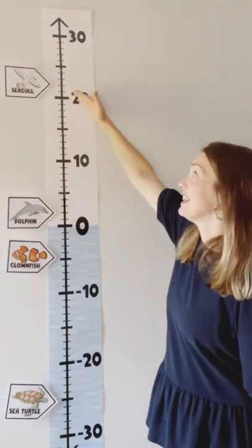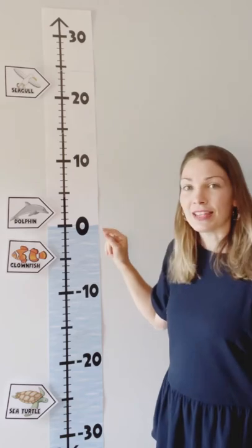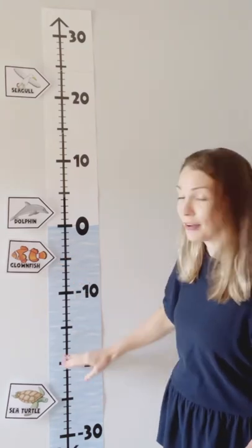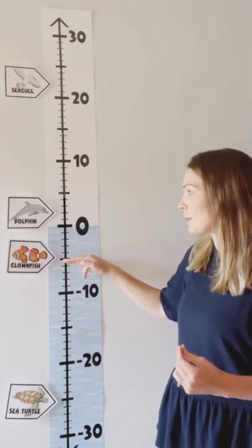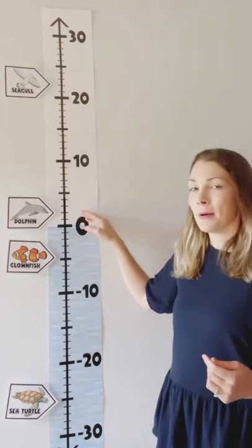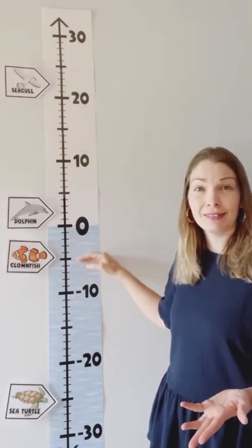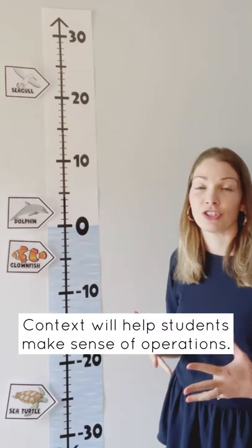Let's think about some things we could ask them. What's the distance between the dolphin and the seagull? As they think through the operation they're doing there — subtraction — they might use that again when we ask, what's the distance between the clownfish and the sea turtle? Most students can look at this and tell you that answer, but if you were to give them 2 minus negative 5 when you start an integer lesson, how many would get it right? They know how it works in context, and this context will help them as they figure out how the operations all work together.